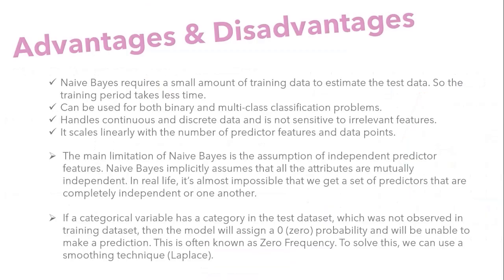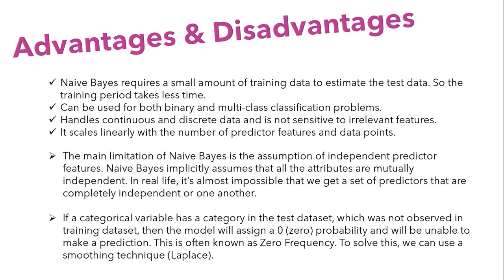Some advantages and disadvantages of the Naive Bayes classifier: it performs best on smaller datasets and can be used for both binary and multi-class classification problems. However, it assumes that all attributes are mutually independent, and in real life it's almost impossible to get a set of predictors completely independent of one another. One major drawback is that if a categorical variable has a category in the test dataset that was not observed in the training dataset, the model will assign zero probability and will be unable to make a prediction — this is known as zero frequency.